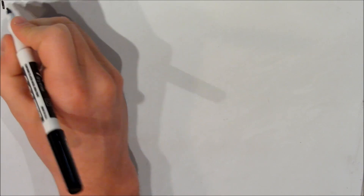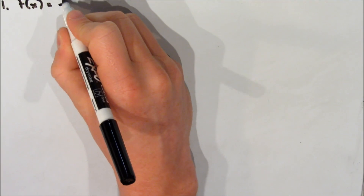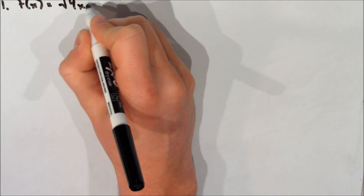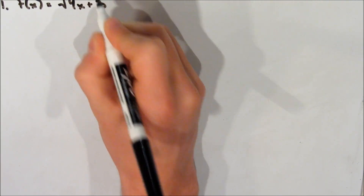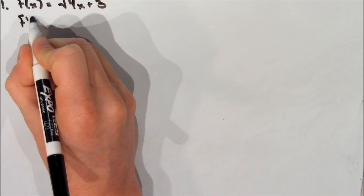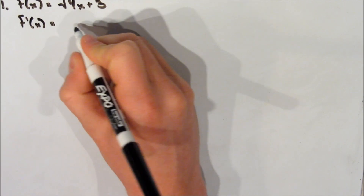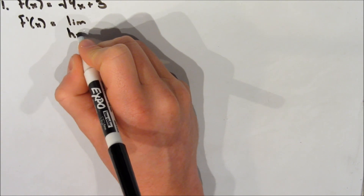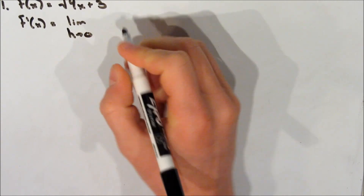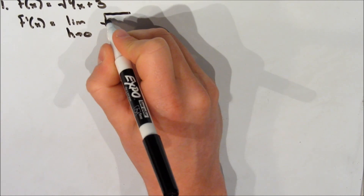Alright, so now let's take a look at our first example. We're going to look at the function f of x is equal to the square root of 4x plus 3. We want to find the derivative of this function, so we're going to say that f prime of x is equal to the limit as h approaches 0 of f of x plus h.